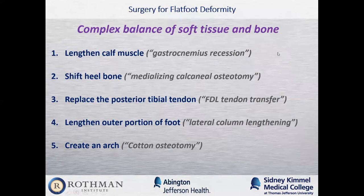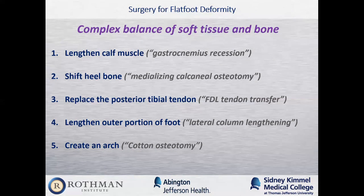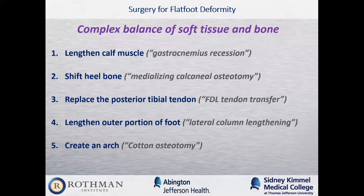Surgery for this condition is involved and multifactorial. Usually we start by lengthening the calf muscle to help correct the deformity, then cut the calcaneus and shift it over. We remove the torn posterior tibial tendon and replace it with the flexor digitorum longus tendon. For more severe deformities, we also lengthen the outer portion of the foot with a lateral column lengthening calcaneal osteotomy, and sometimes add a Cotton osteotomy through the middle of the arch to create or enhance the arch.